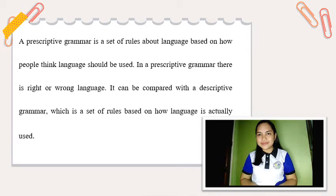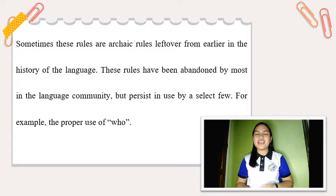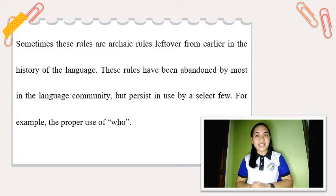In connection, sometimes these rules are archaic rules that are left over from earlier in the history of the language. These rules are abandoned by most in the language community, but persist in use by a select few. An example is the proper use of 'who.'